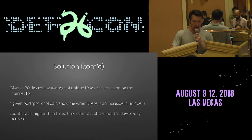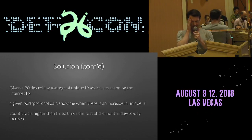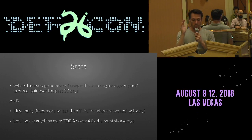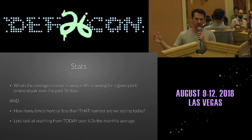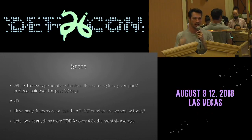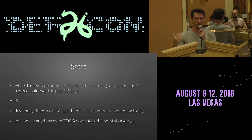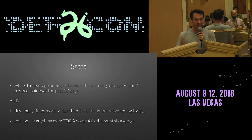What is the average number of unique IP addresses scanning for a given port/protocol over the past 30 days? What's the average daily? And what is the difference from yesterday to today — is it a 0.9x multiplier, a 1.1x multiplier of that rolling 30-day average? Show me everything above four times the regular 30-day baseline. I can see some people thinking this is so simple — and it is, I know — but it's really, really effective when you have really good, clean data.